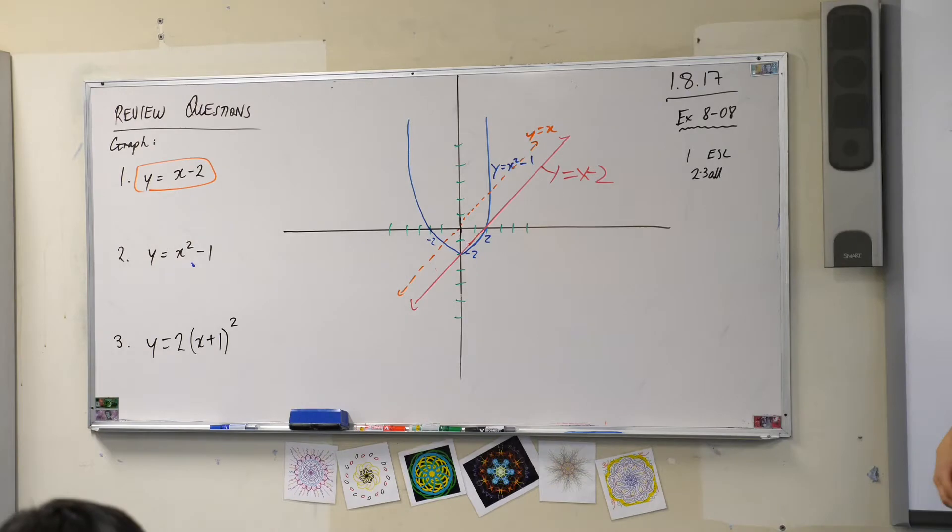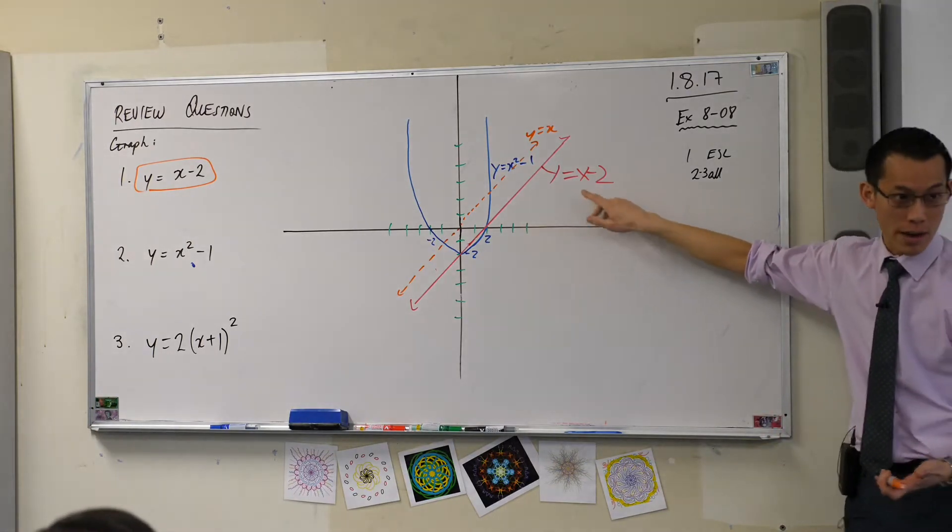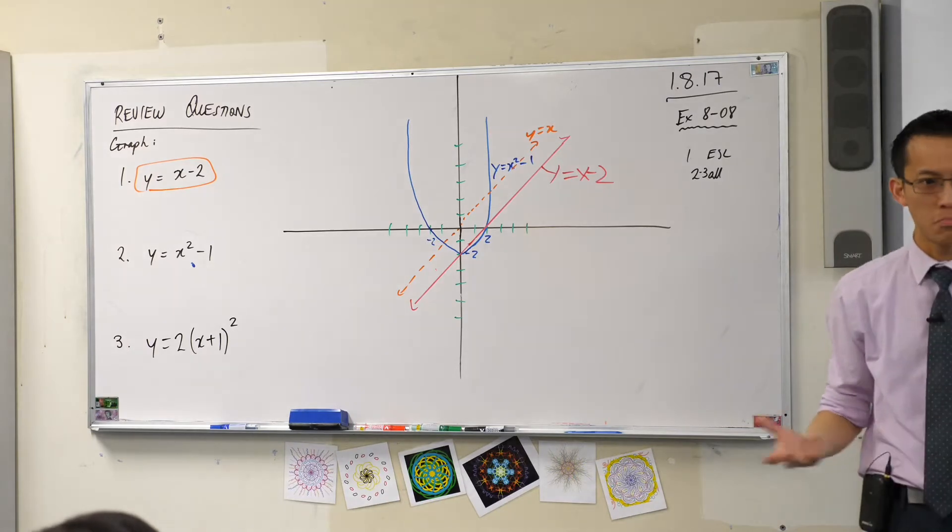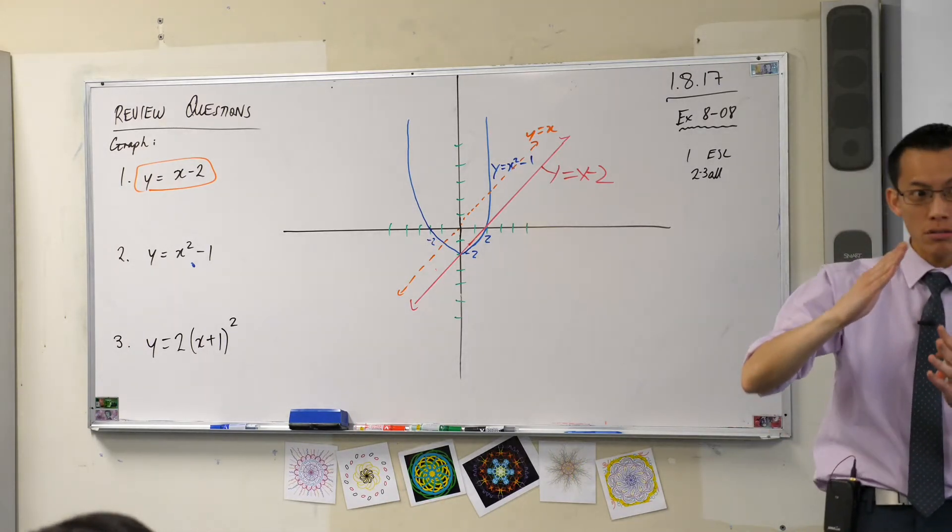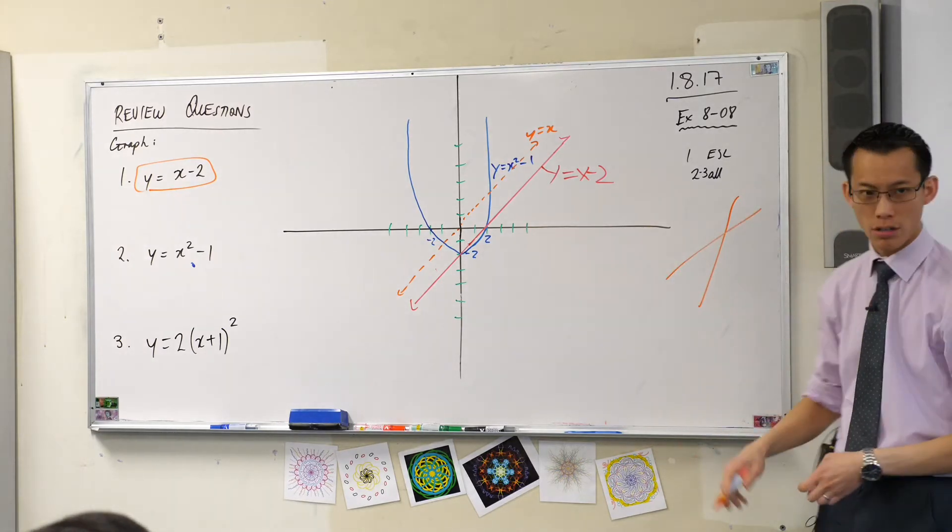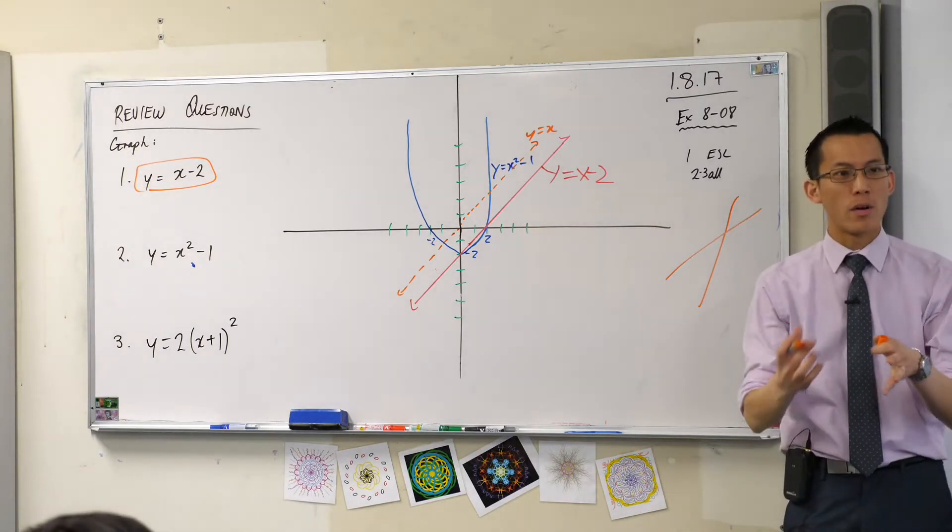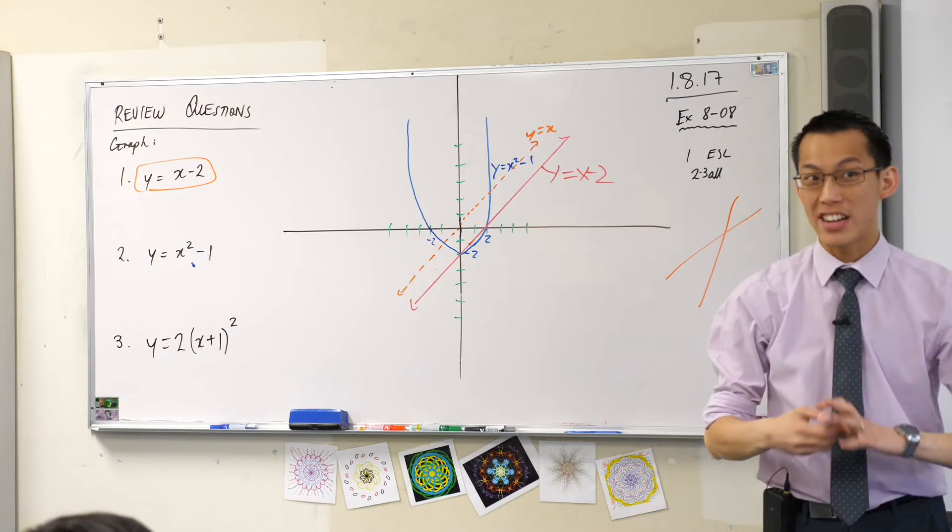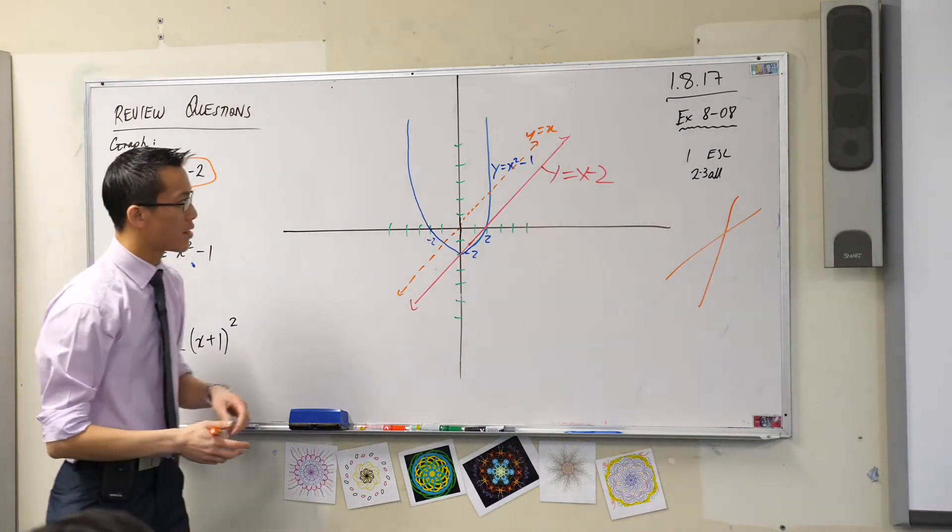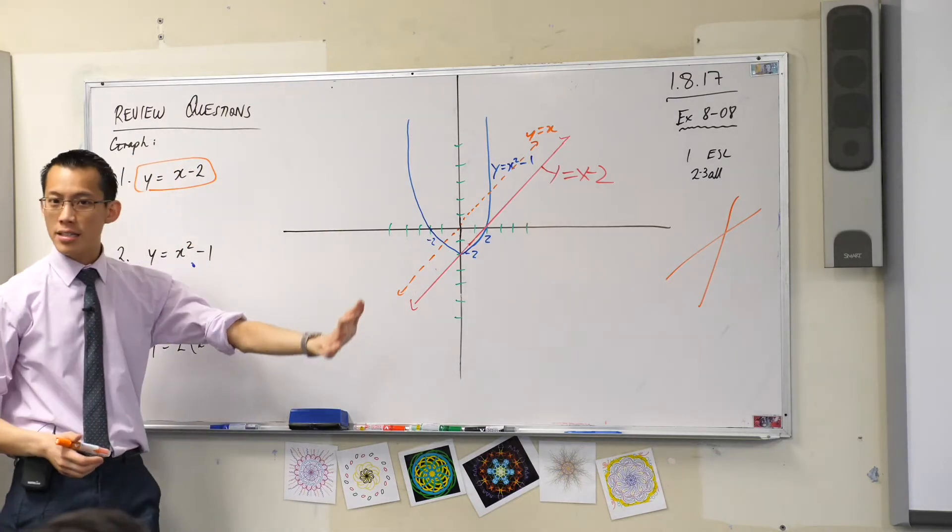Now I want you to really carefully compare it to the graph that Leo drew for y equals x minus 2. What things are similar? There's lots of things that are similar. Number one, they're both diagonal. But they're not just diagonal. Like this line is diagonal too and this line is diagonal. They're not just diagonal. What else can you say, Ryan? They're exactly parallel, right? So the gradients are the same. Very good. Those things are the same.